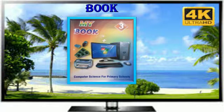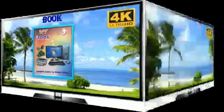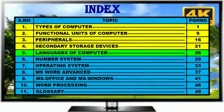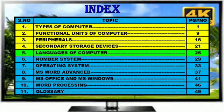The computer is showing the book of computer, my book. Now open the index. Here is the index. Chapter number 1: Types of Computer. Chapter number 2: Functional Unit of Computer. Chapter number 3: Peripherals. Chapter number 4: Secondary Storage Devices. Today I will take Chapter number 5: Languages of Computer.